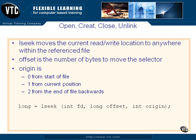we need a way of seeking our way back and forth. It's called seeking because the head on the disk drives would seek a location. So we're going to use lseek — it returns a long — and lseek moves the current read and write location to anywhere within the open file. Obviously, you have to have a file already open. The offset in the lseek call is the number of bytes to move the selector. When you first open a file, the selector is at the beginning of the file.